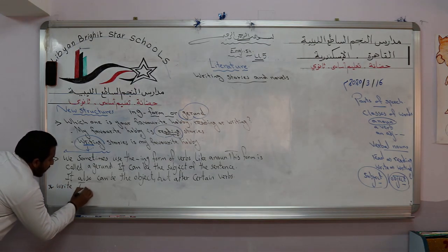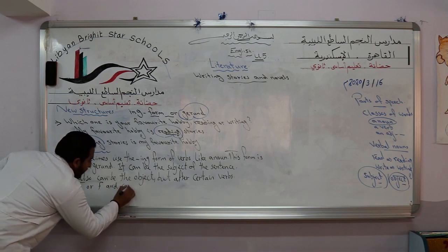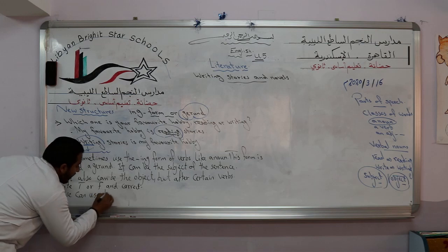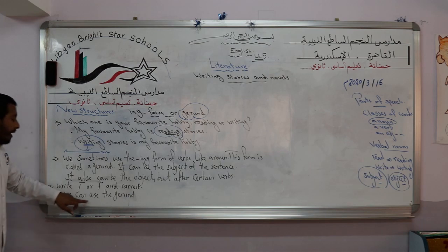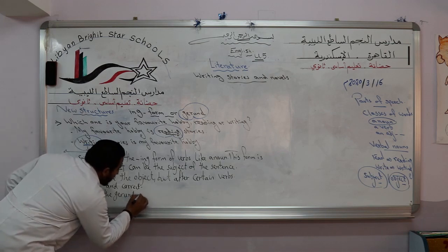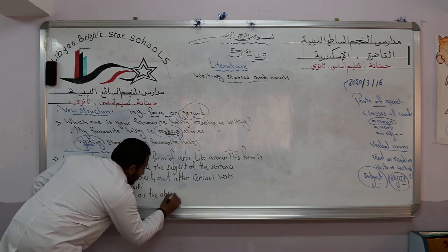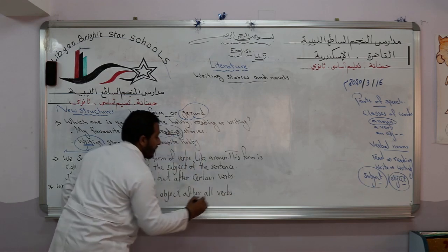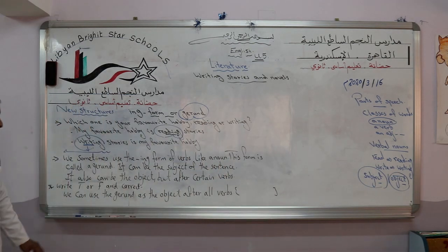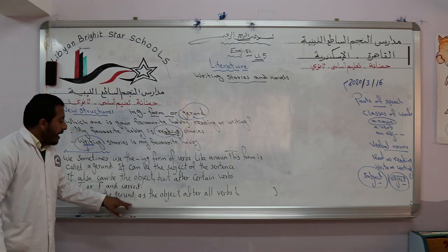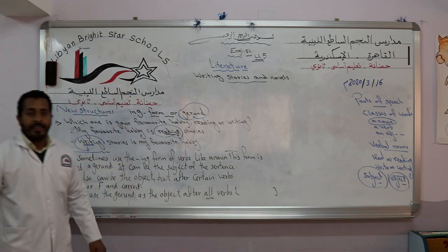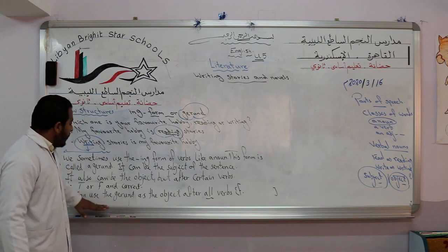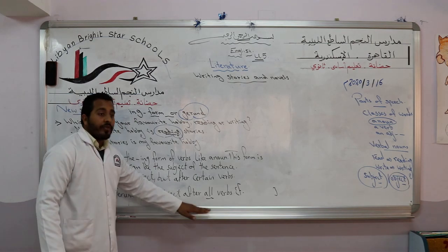Write T-O-R-F-N correct. We can use the gerund as the object after all verbs. Who can answer this question? We can use the gerund as the object after all verbs. It's false. If I want to correct it, we can say: we can use the gerund as the object after certain verbs.